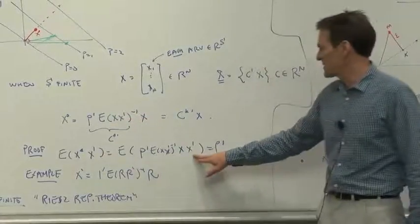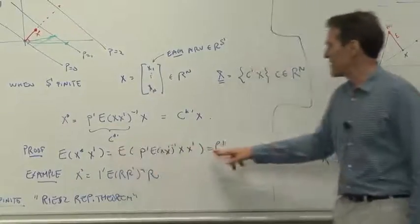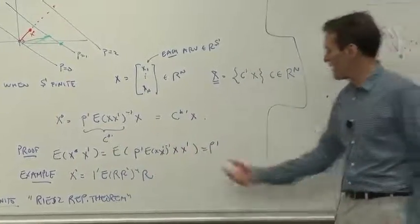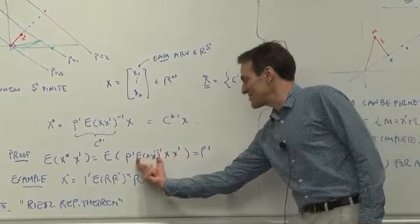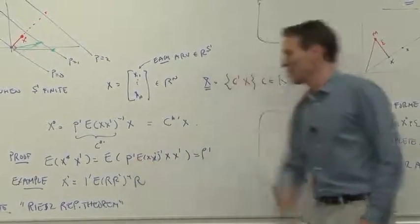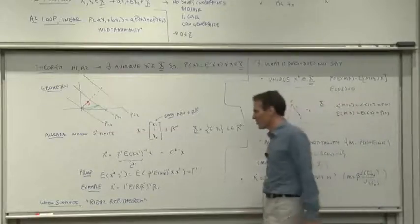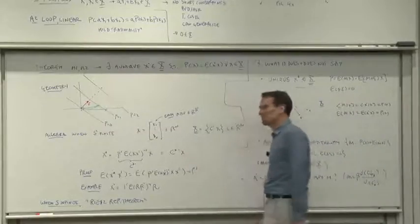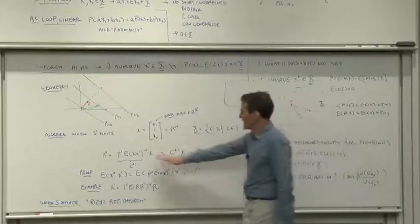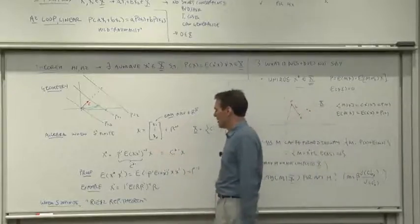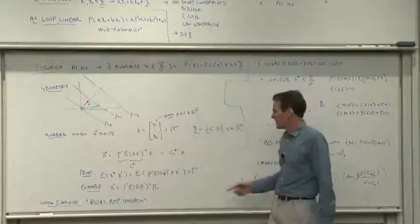x* is p [E(xx')]^(-1) x, and then we multiply by the x. Now take expectations, and voilà: [E(xx')]' cancels [E(xx')]^(-1), and we're left with the prices. It works by construction. It was constructed to work. Fine, it works.